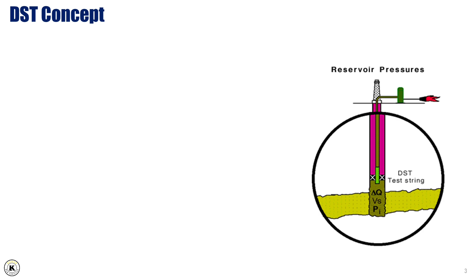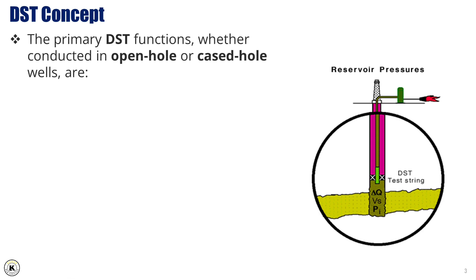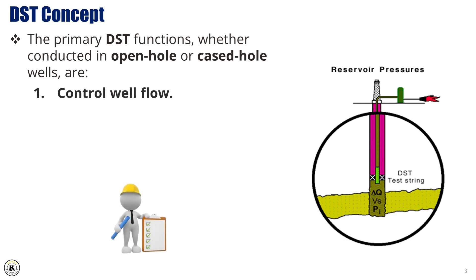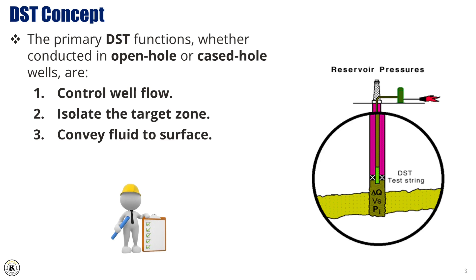The DST concept: The primary DST functions, whether conducted in open hole or cased hole wells, are: 1. Control well flow. 2. Isolate the target zone. 3. Convey fluid to surface. 4. Acquire downhole data.